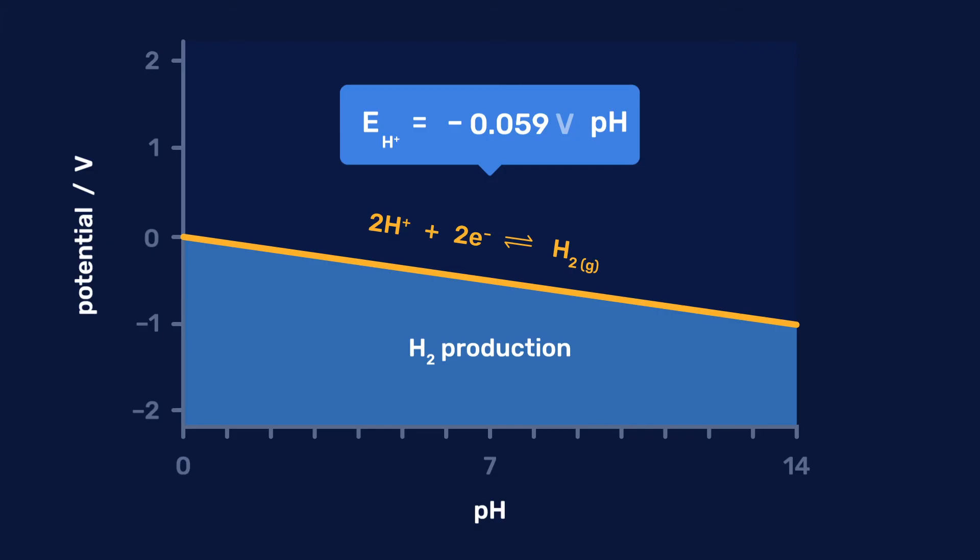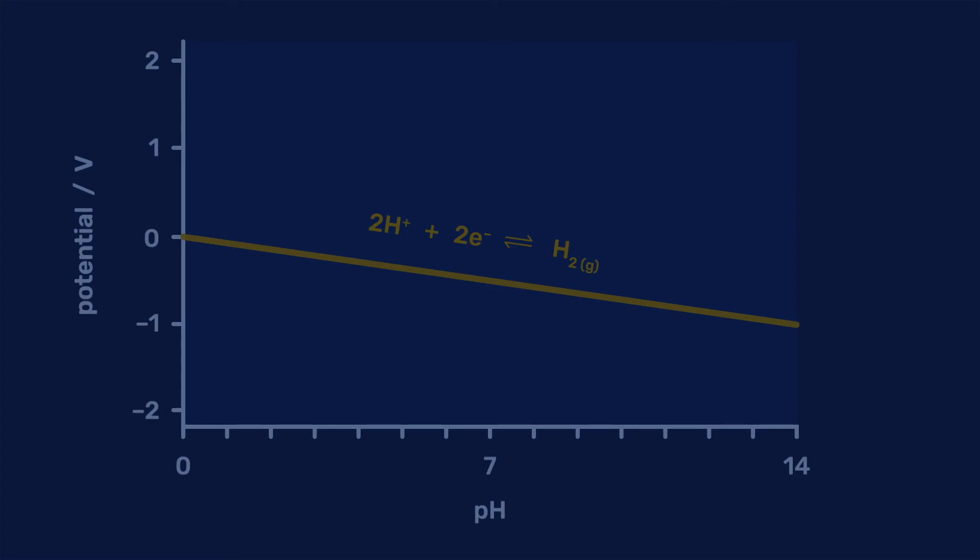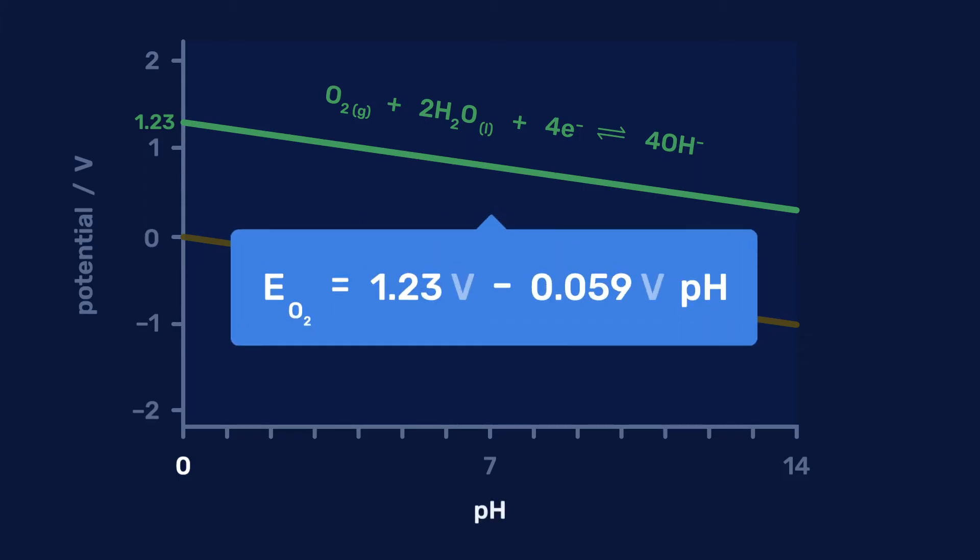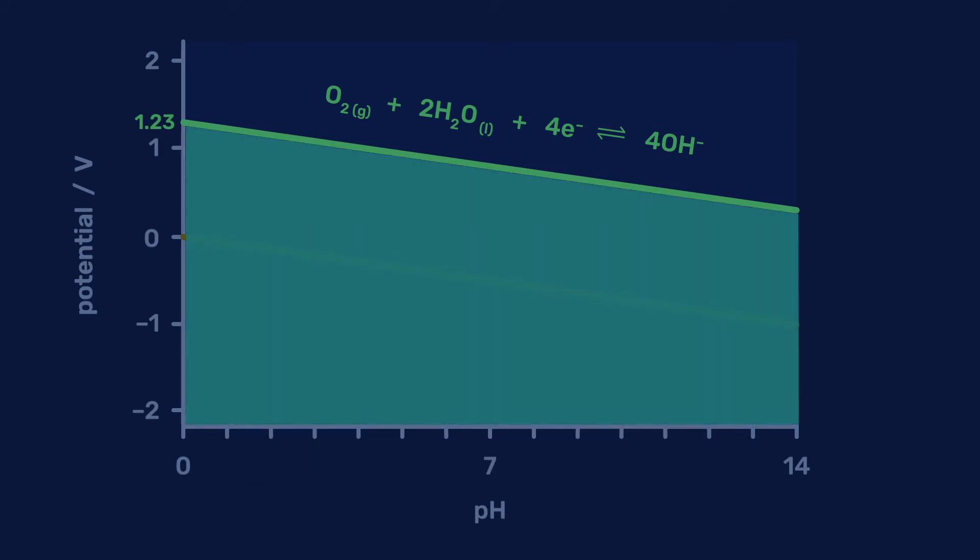Another important half-cell is the reduction of oxygen to produce hydroxyl ions. It has the same dependence on pH as the reduction of protons, and is therefore parallel to it on this graph. It lies above it, starting at 1.23 volts for pH equals zero, so that its potential is 1.23 - 0.059 times pH, again at ambient temperature. Half-cells with a potential below this line lead to the reduction of oxygen.